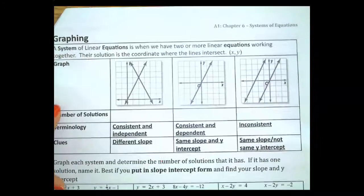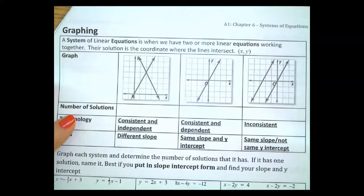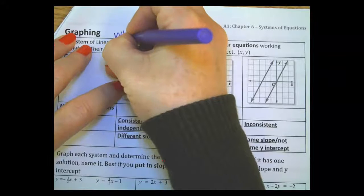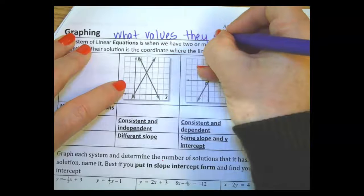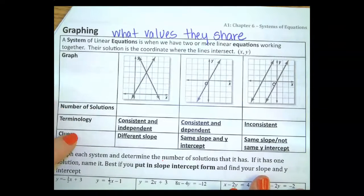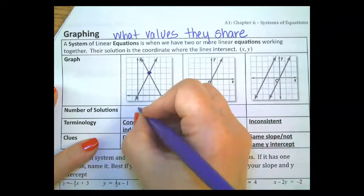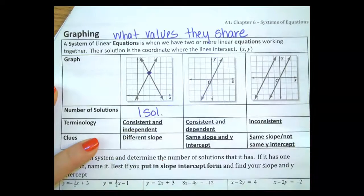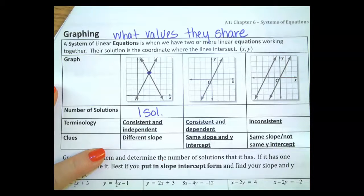So when we're graphing, we are looking at a system means what values they share. What is a value that both of them have? So if I look at this one, they share this value here. So that's one solution that they share. It is called consistent and independent. So both of these are kind of independent of another. And they have different slopes.